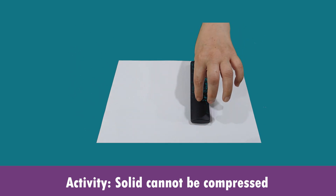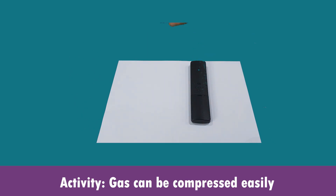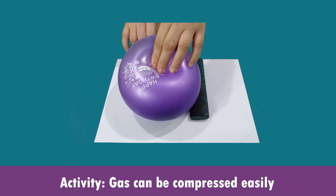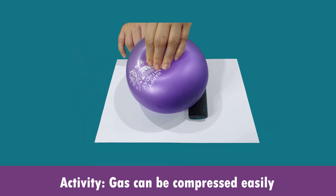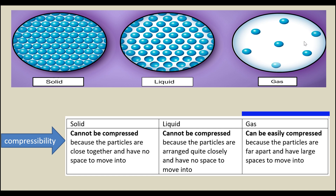Solid cannot be compressed. Gas, on the other hand, can be compressed easily. For compressibility: solid cannot be compressed because the particles are close together and have no space to move into. Liquid cannot be compressed because the particles are arranged quite closely and have no space to move into. Gas can be compressed easily because the particles are far apart and have large spaces to move into.